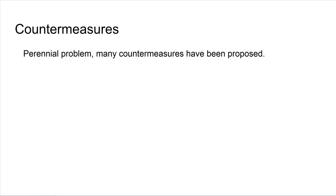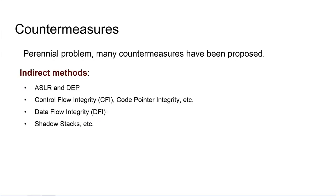This problem has been around forever, and over the years many countermeasures have been proposed. We can partition these into two main groups. The first is what I call indirect methods — methods which don't actually aim to prevent a memory error, but just aim to mitigate it. For example, address space randomization and data execution protection are commonly deployed. There are stronger things like control flow integrity, code pointer integrity, and shadow stacks, which aim to stop control flow hijacking attacks, and data flow integrity for data flow attacks.